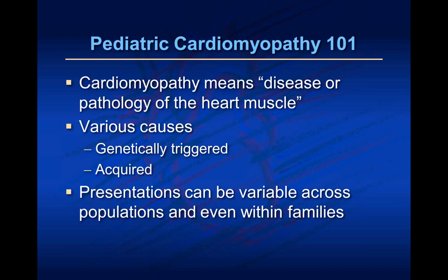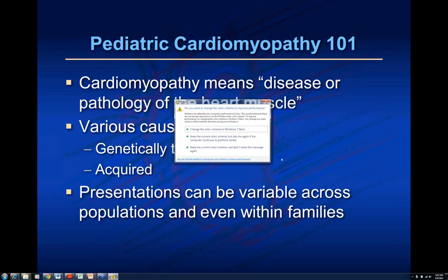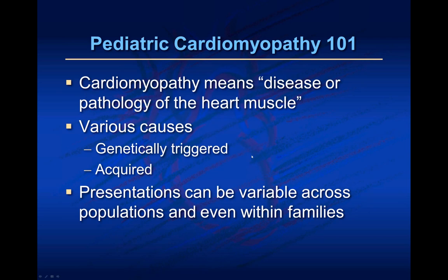This talk is specifically devoted to cardiomyopathy — meaning disease, pathology, or abnormality of the heart muscle itself. There are various causes throughout the world. We're going to focus on the genetically triggered cardiomyopathies, but there are also acquired forms seen in pediatric clinics. The most common cause of acquired heart muscle disease in the United States is secondary to coronary disease, or ischemic cardiomyopathy. But there are other pediatric acquired forms, such as infections like viral myocarditis, which can also result in cardiomyopathy.